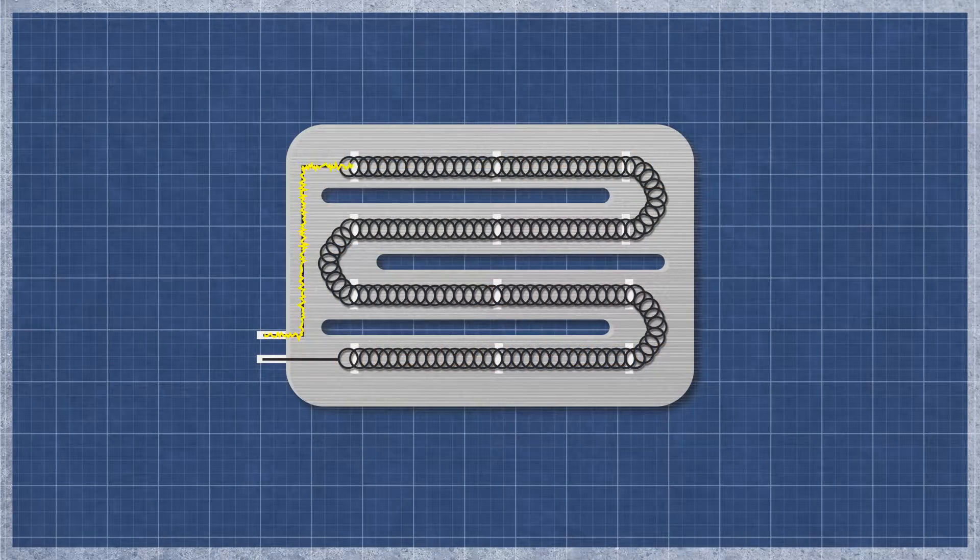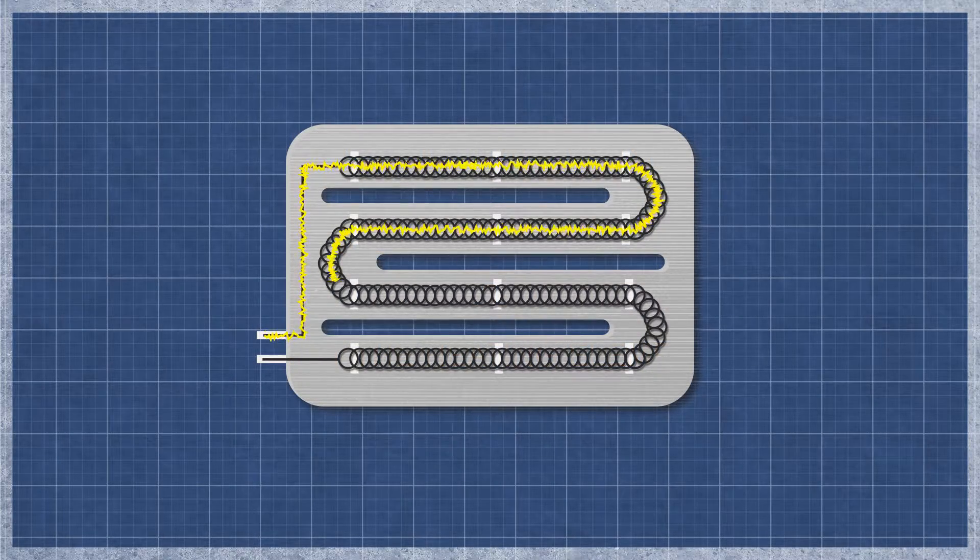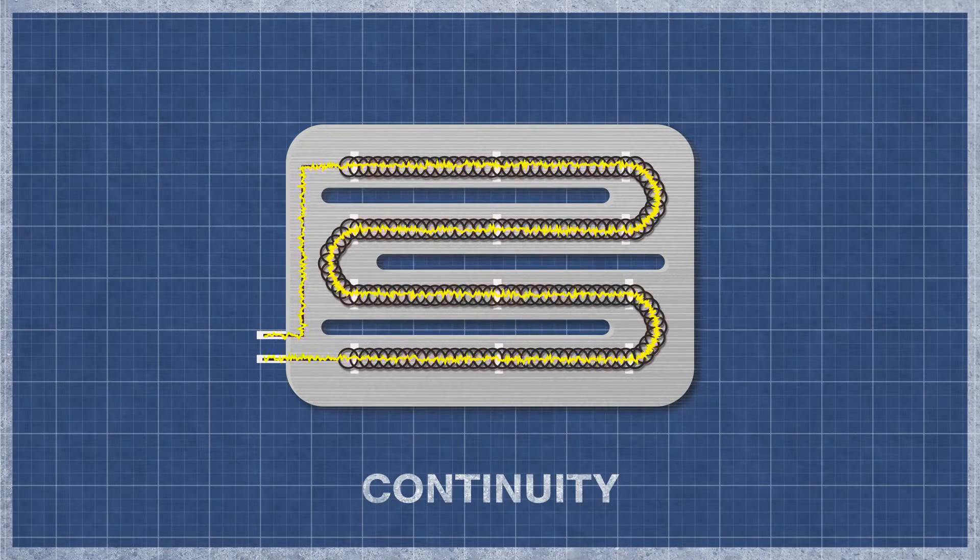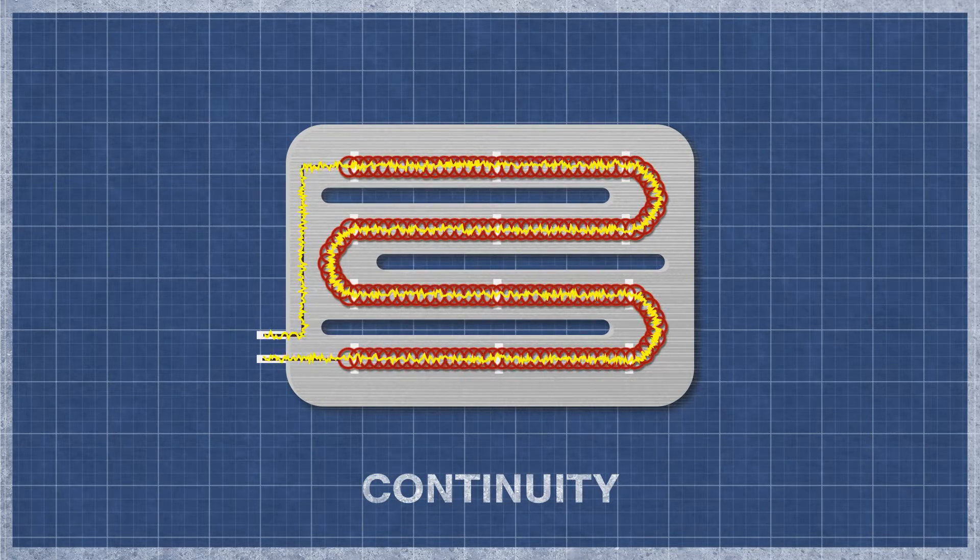A dryer heater works similarly to an incandescent light bulb. As electricity flows through the element, the resistance in the material generates heat.